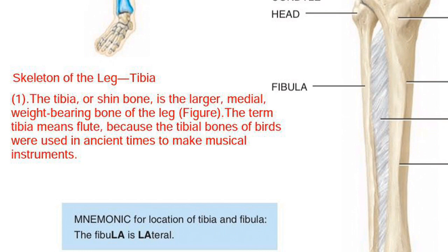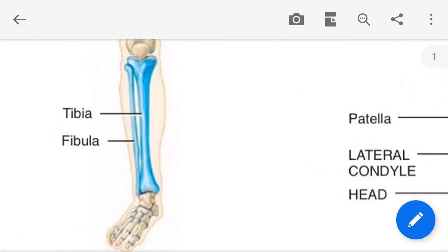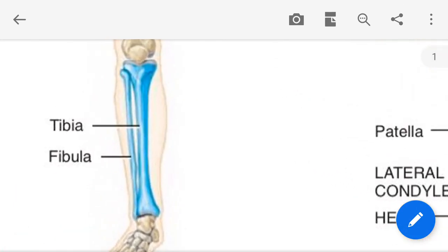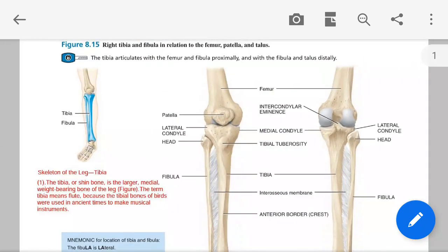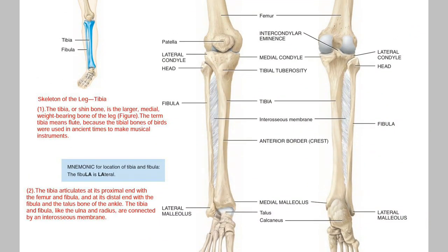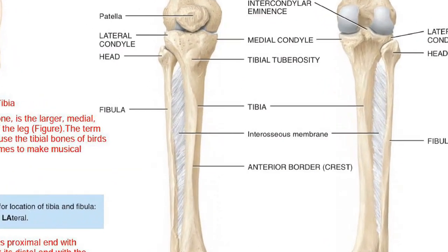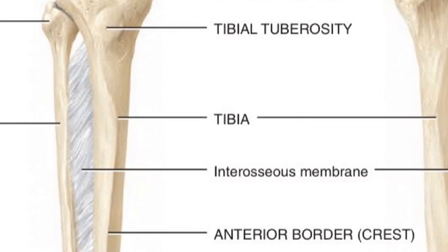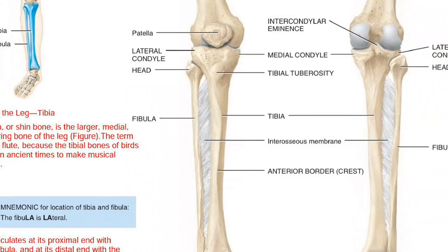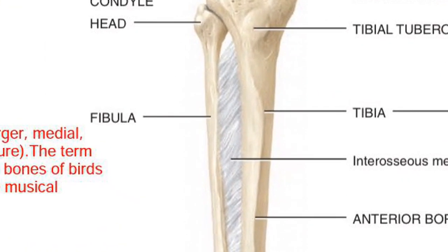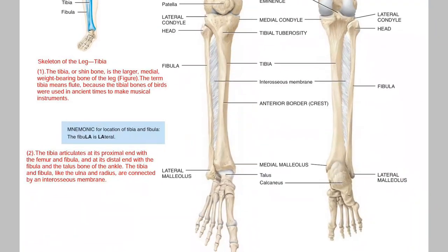Starting with the first point — skeleton of the leg, tibia. In our leg, both bones — the tibia and fibula — are shown in blue color. In this figure you can see the tibia, and this one is the fibula.